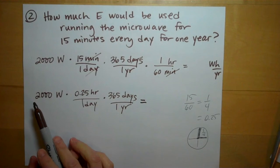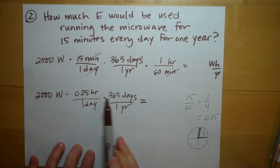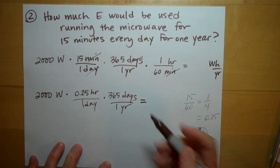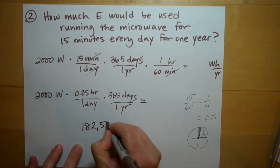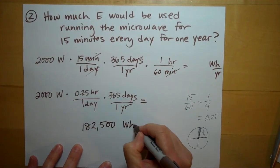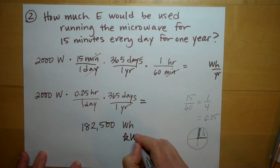All right, so we're going to multiply this straight across. 2,000 times 0.25 times 365, and it comes out to 182,500 watt-hours.